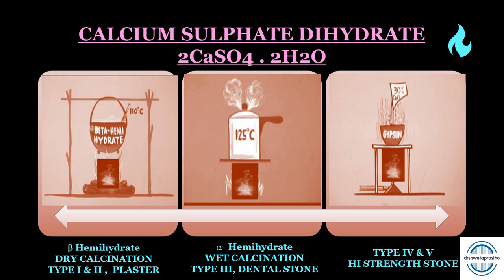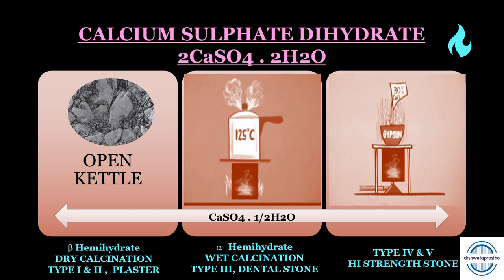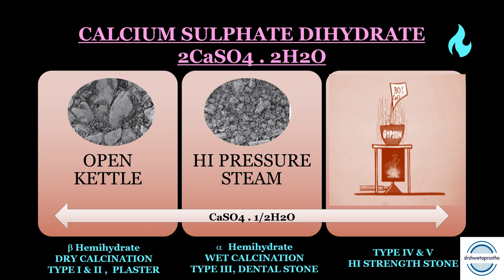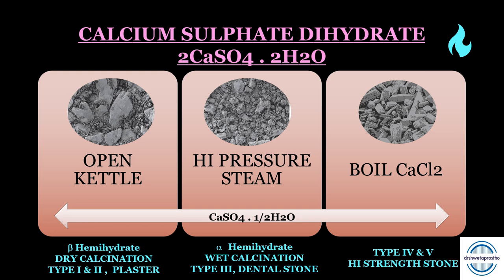When calcination is done in an open kettle, it forms irregular, porous, randomly shaped crystals — producing type 1 and type 2 plaster. Calcination under pressure forms more uniform, denser, larger, and smoother crystals — producing type 3 dental stone. Calcination with calcium chloride forms very dense crystals that are cubic or rectangular in shape, larger crystals, forming type 4 (dental stone high strength) and type 5 (high strength with high expansion).